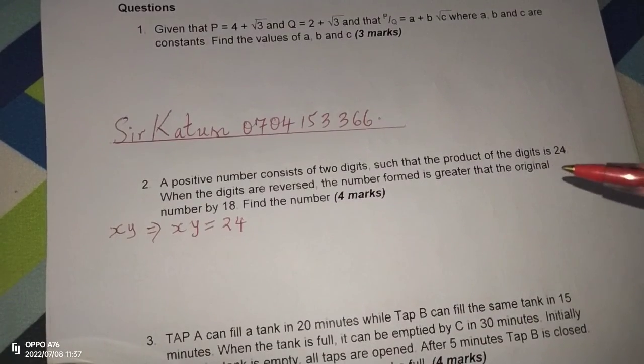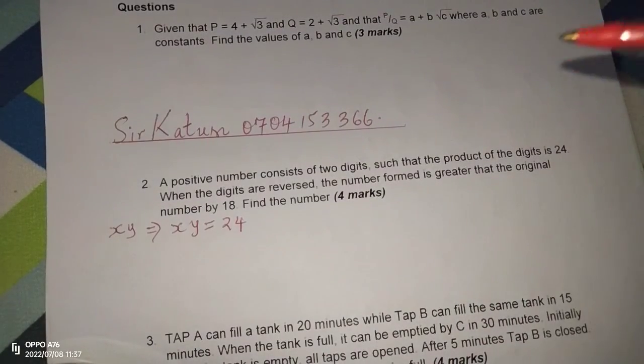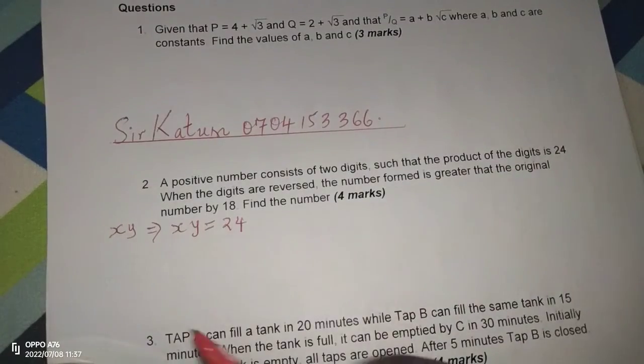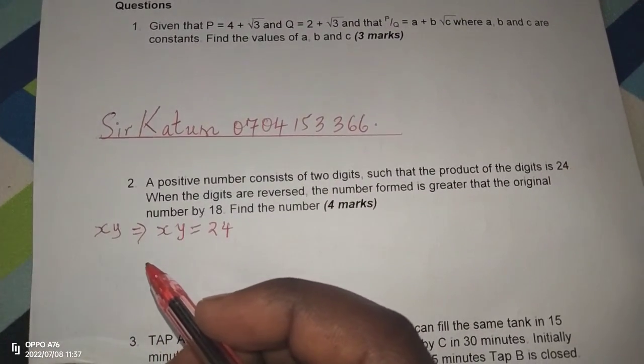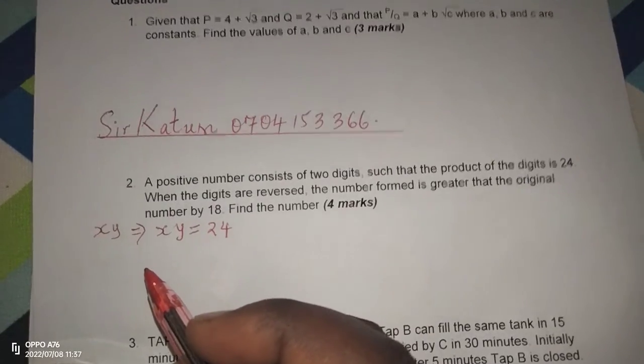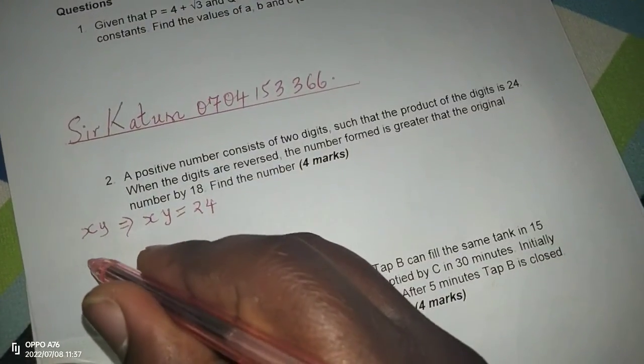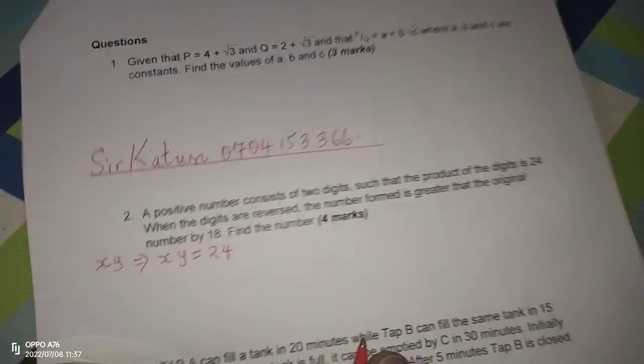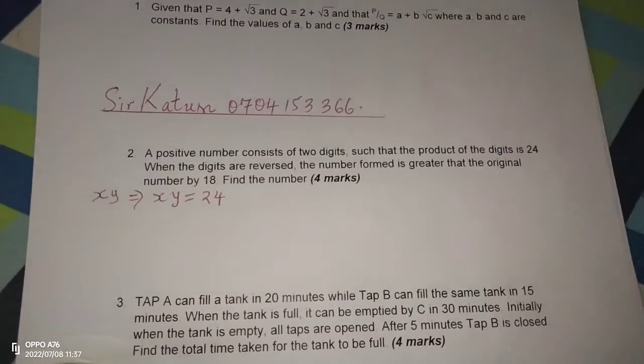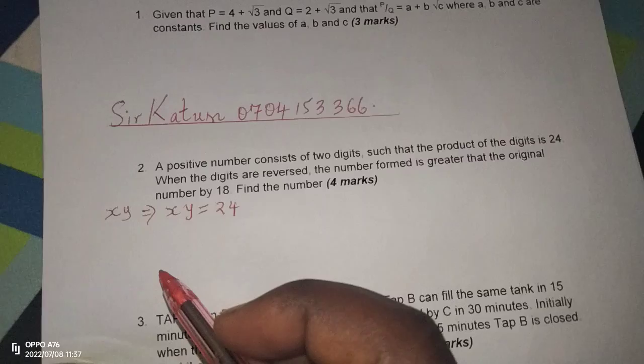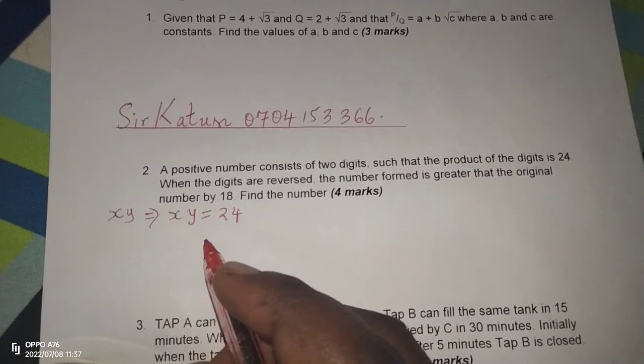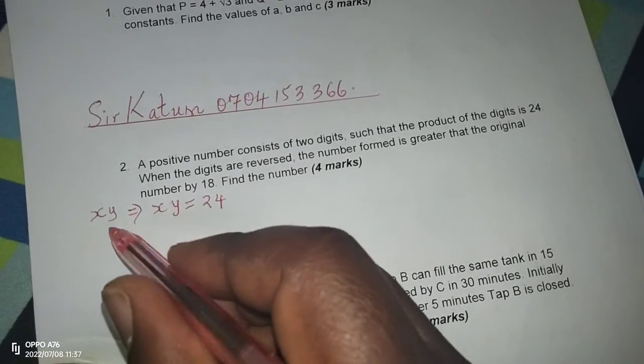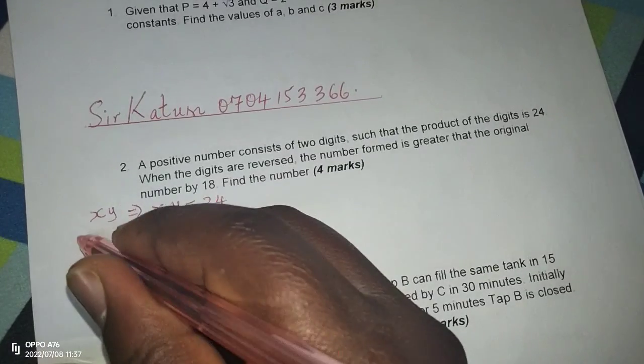The number formed exceeds the original by 18. So we can go to what we call the total value of a number such that if the number is in the ones, its value is the digit multiplied by 1. But if it is in the tens position, then its value is 10 times the digit.